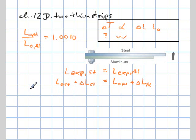I'm going to write this one here down again, L0 steel and now the delta L for the steel I'm going to write as alpha steel, and finally that one I do know, times the original length of the steel times the delta T. And that equals the original length of the aluminum plus the alpha of the aluminum times the original length of the aluminum times delta T.